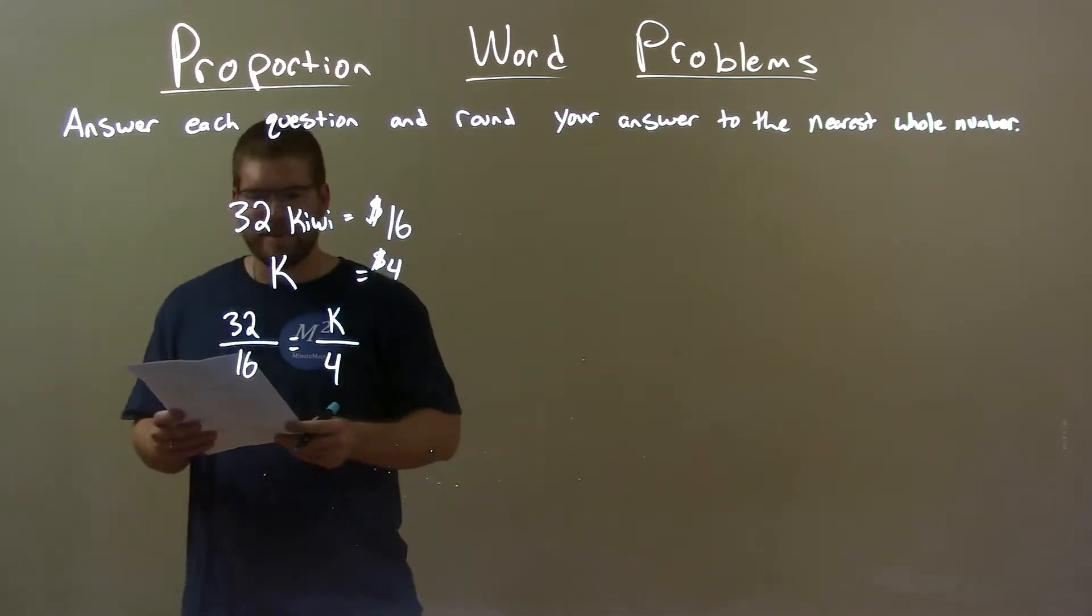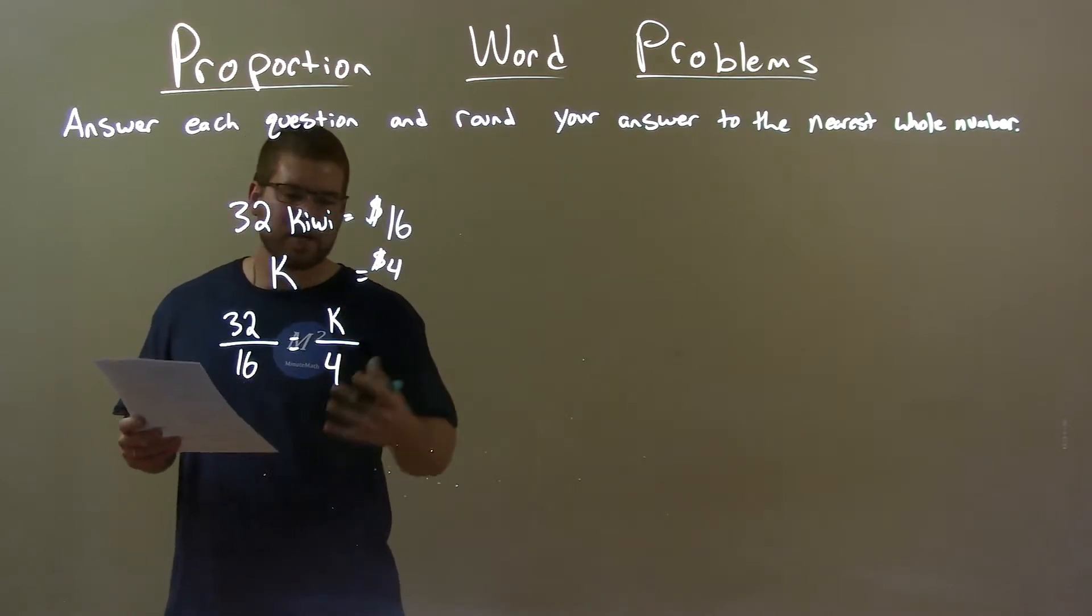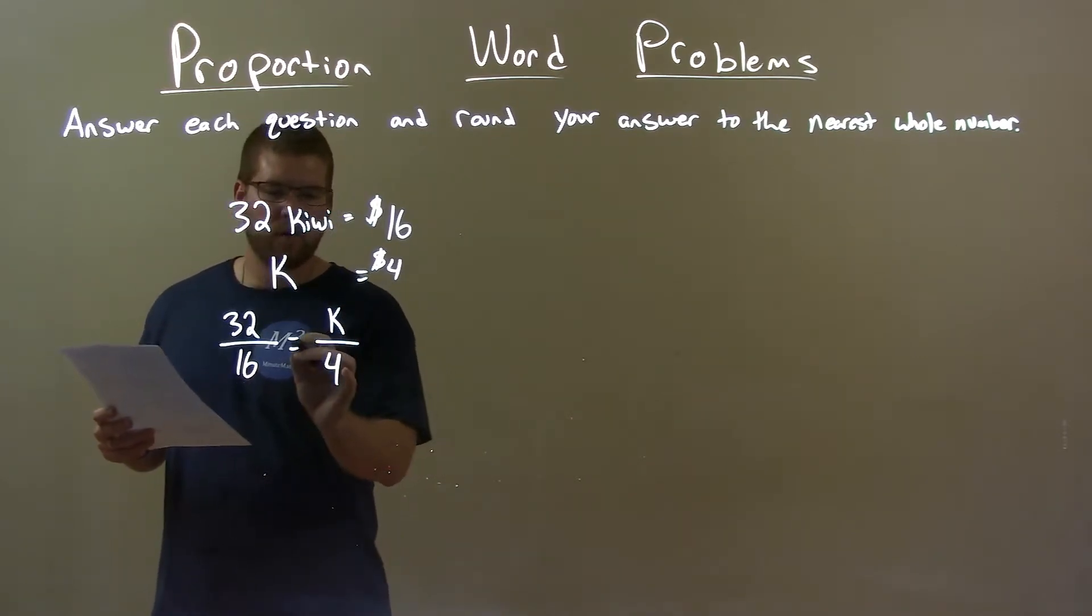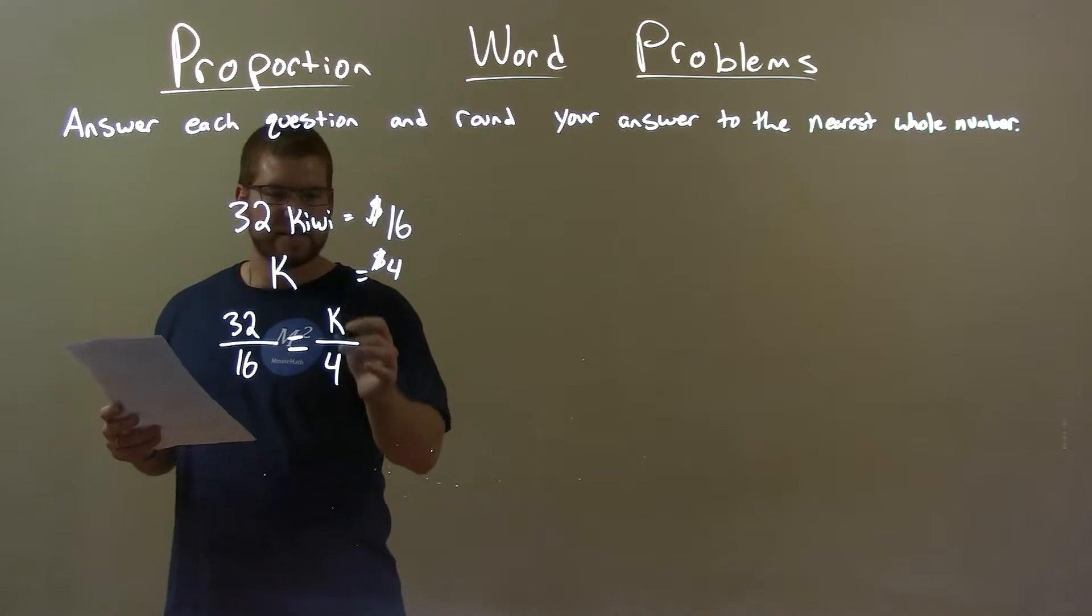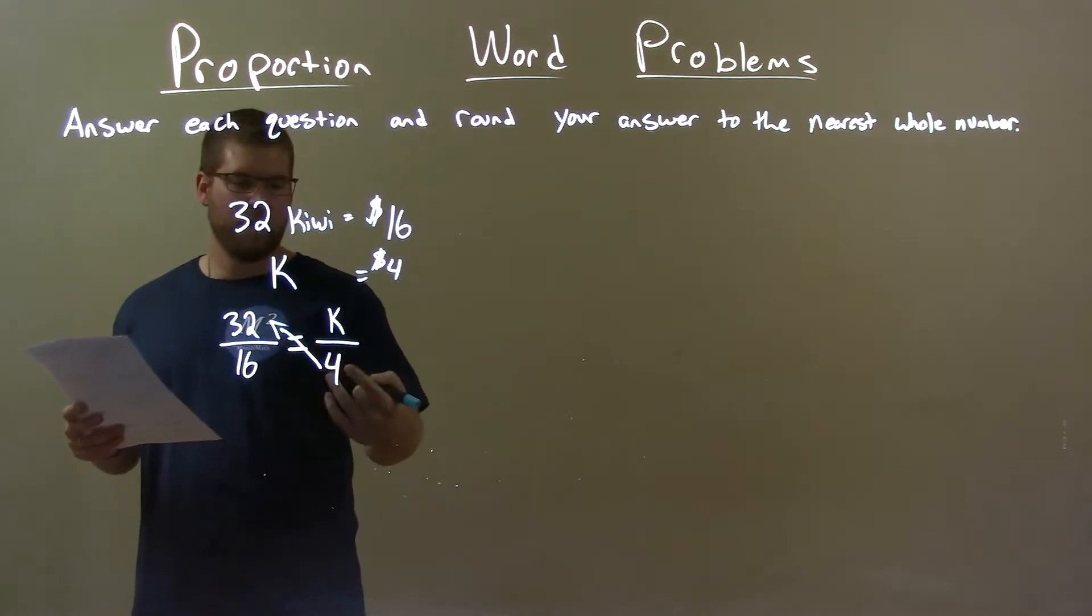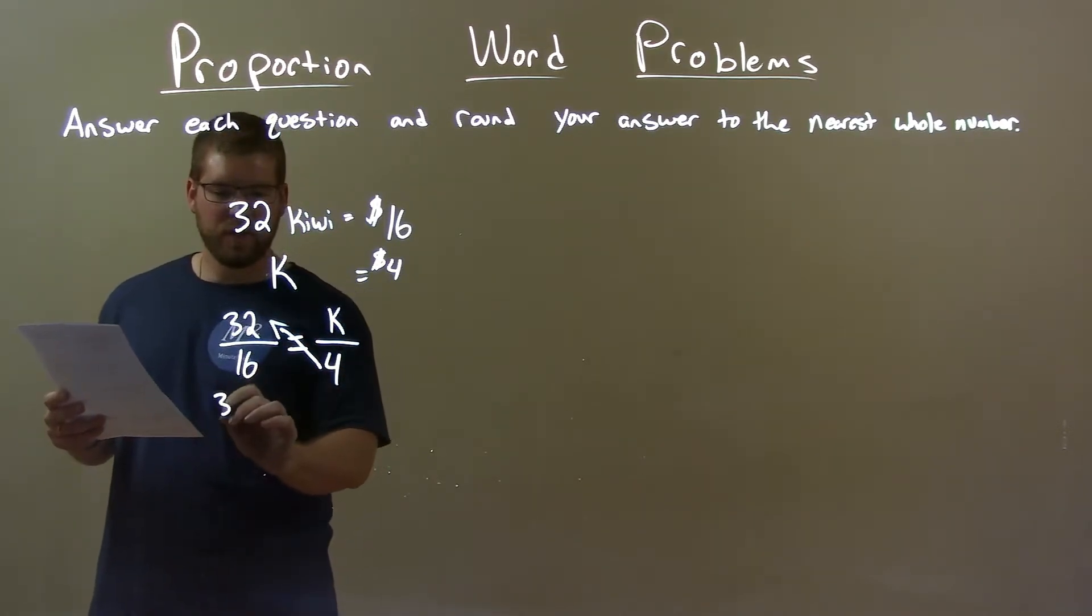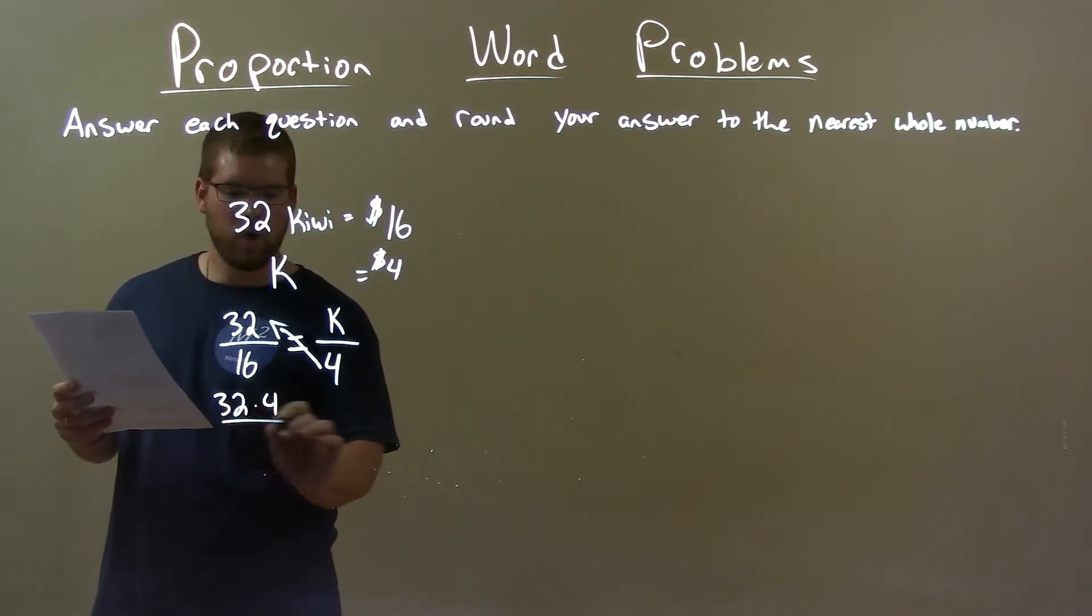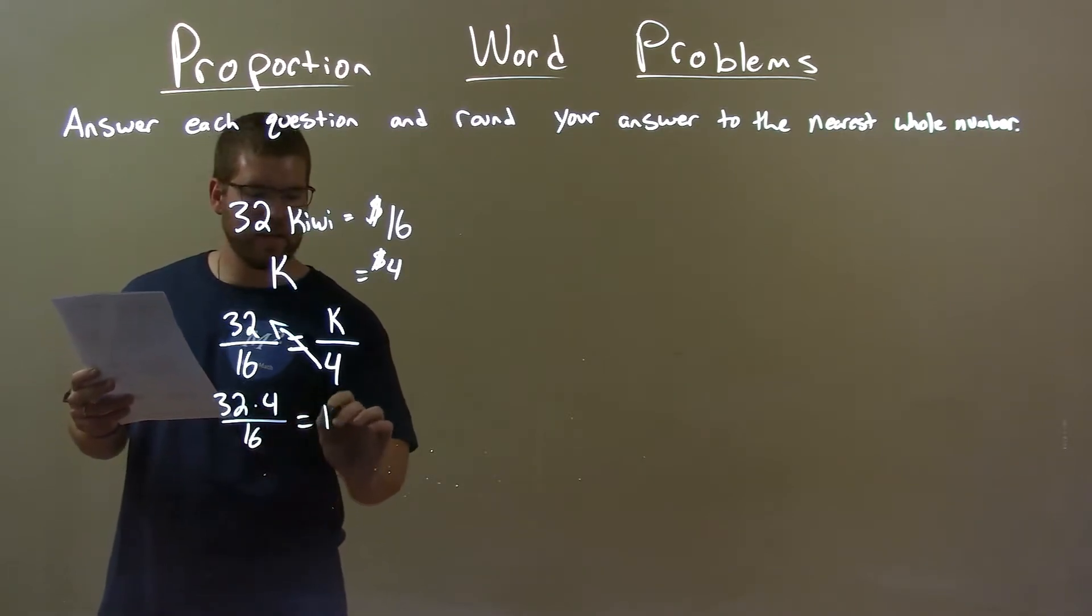Now let's solve this proportion. So what I actually want to do is you can cross multiply here. But since k is really by itself on the right, if I just multiply 4 to both sides, I just bring 4 over here. I multiply 4 up. I'm left with 32 times 4 over 16, and it's equal to k.